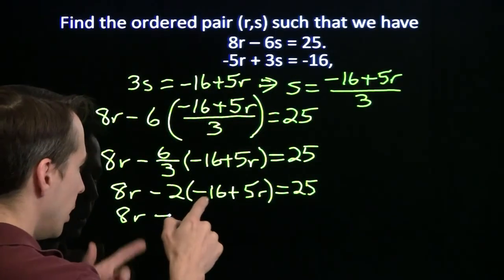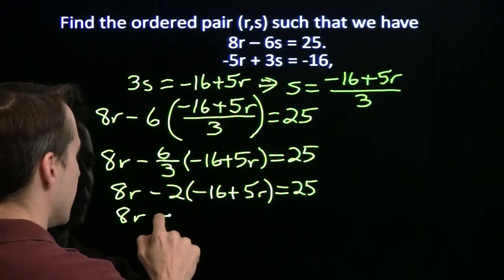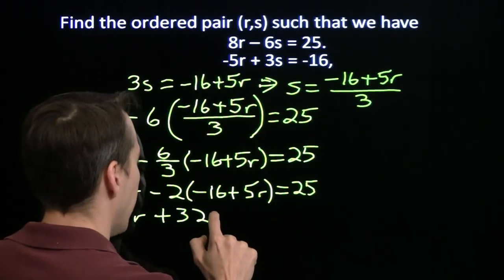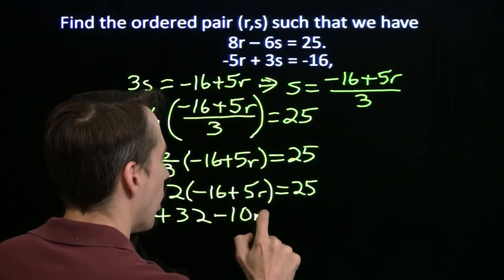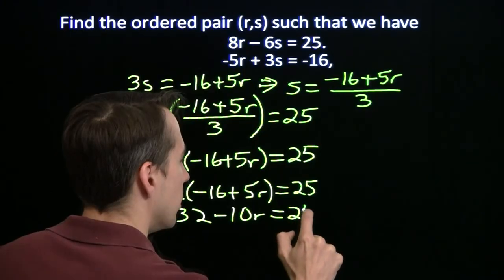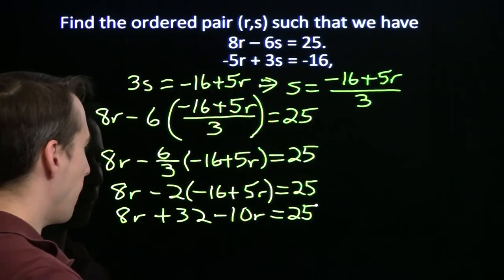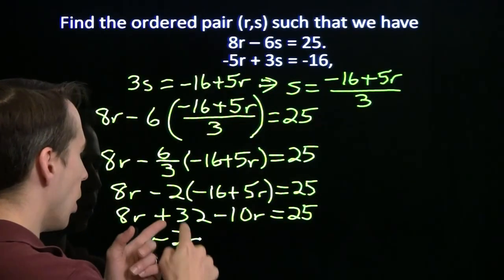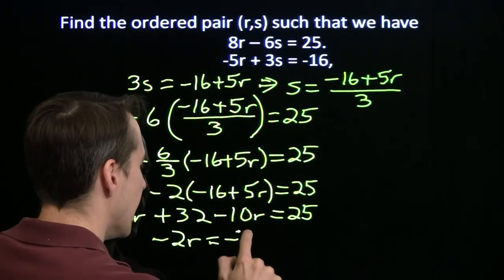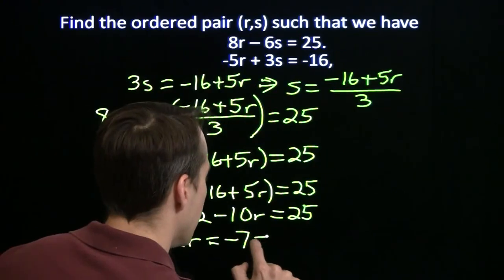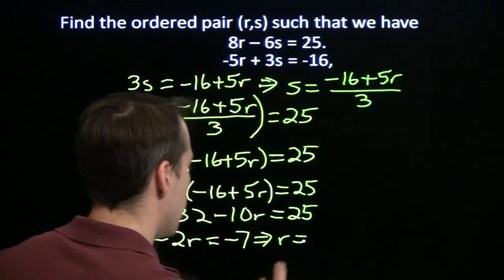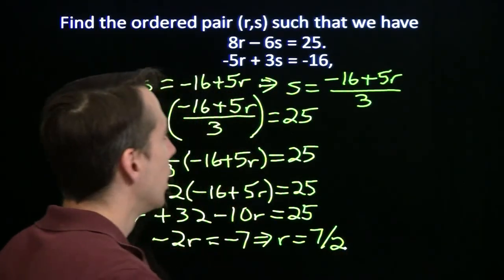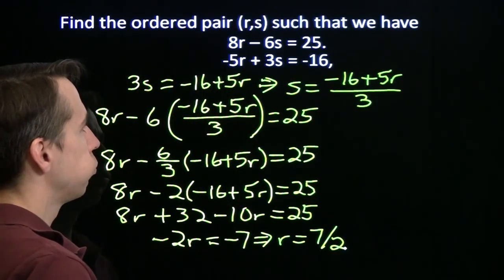And now we have a simple linear equation that we can solve. Now we won't always be able to avoid fractions like this, but when you see an opportunity to avoid them, get a nice little cancellation there, definitely want to go for that. Multiply this out, we have negative 2 times negative 16, that gives us a plus 32. Negative 2 times a plus 5r gives us minus 10r, equals 25. Now over here 8r minus 10r is going to give me minus 2r. I'm going to subtract 32 from both sides, that gives me negative 7. And that tells me that r, divide both sides by negative 2, we'll get r is 7 halves.